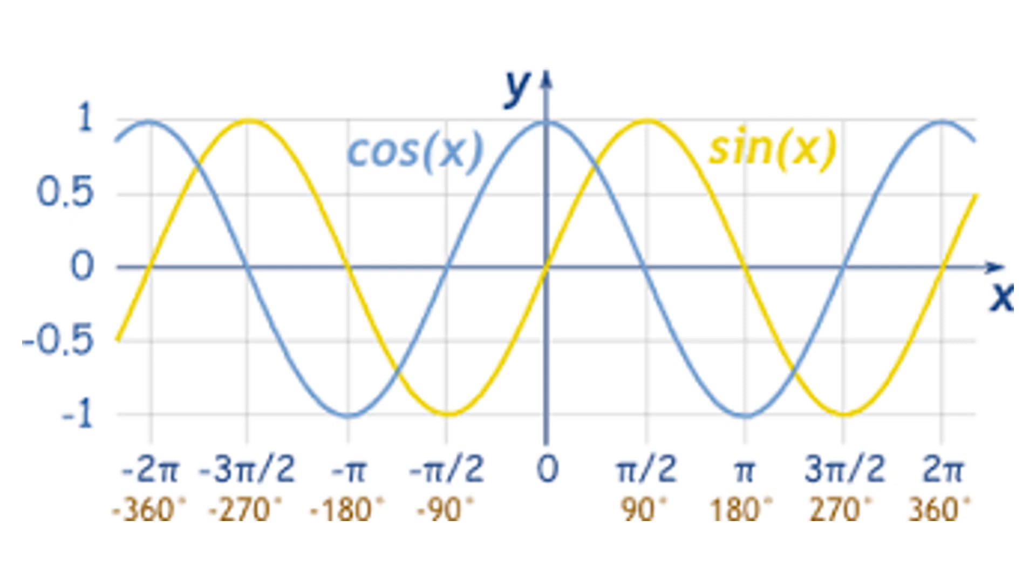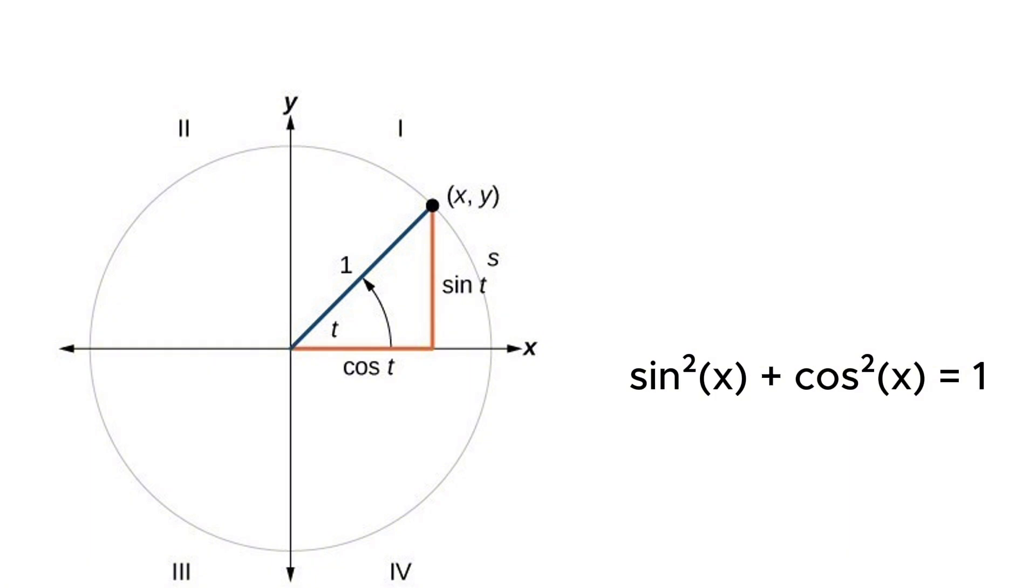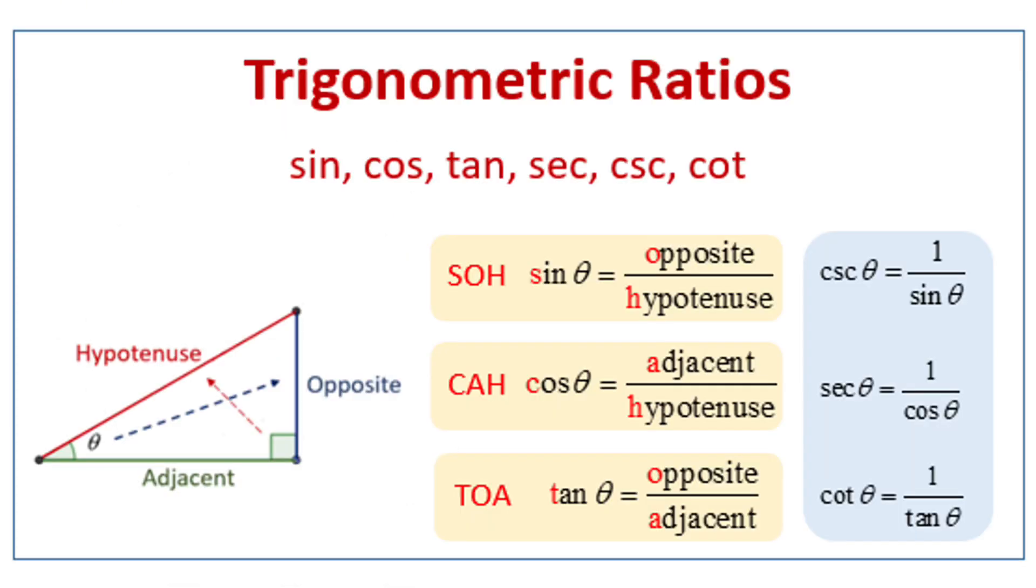A must-know identity is sine squared x plus cosine squared x equals one. This is because the cosine is basically our bottom part and the sine is the top part, and this is basically like the Pythagorean theorem: a squared plus b squared equals c squared. This is the same thing, and that's why it's equal to one. I would highly recommend watching my video about these trigonometric ratios.